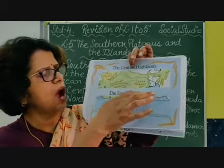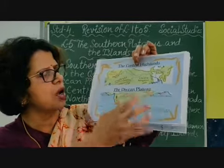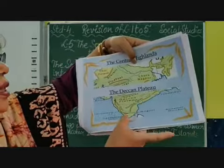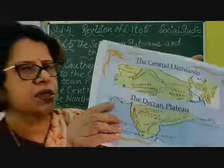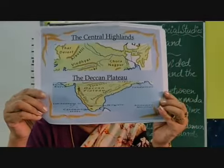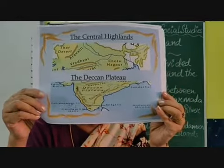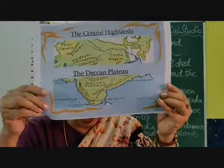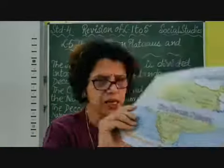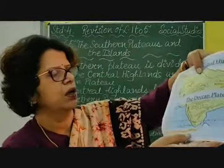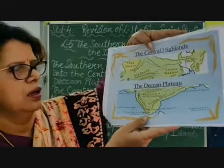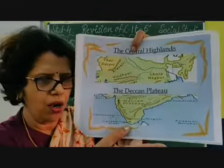These two ghats — the western ghats and the eastern ghats — they meet at the Nilgiri hills. They meet at Nilgiri hills, eastern ghats and western ghats. And Anaimudi is their highest peak, which is in Kerala.